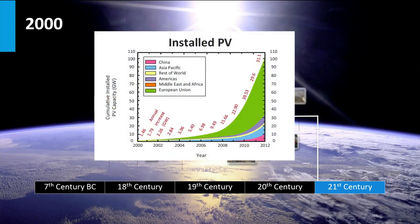At the end of the 90s, the total worldwide installed photovoltaic power reached 1 GW in 1999.